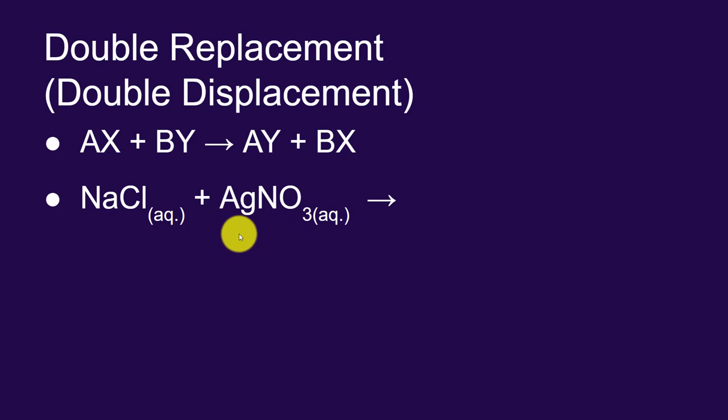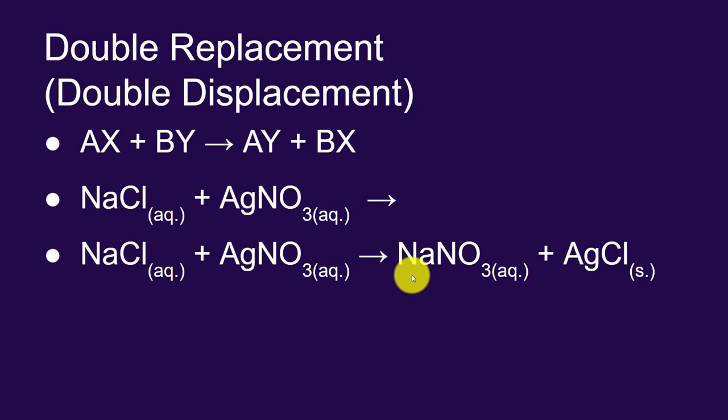And it will start dancing with the nitrate with a minus charge, and the silver with a plus charge will start dancing with the chloride with a minus charge. And as a result, you'll get these new dance partners, the sodium nitrate and the silver chloride. The sodium wouldn't start dancing with the silver because those both have positive charges. It won't be attracted. Likewise, the nitrate won't start dancing with the chloride. So these are the only possible products.